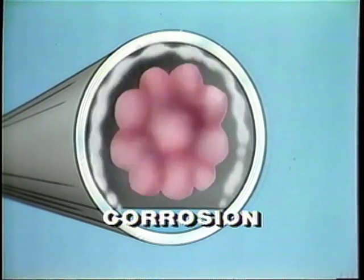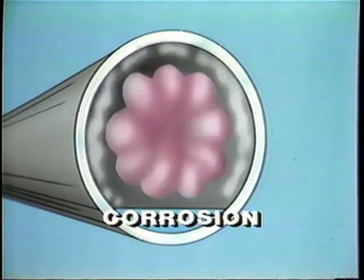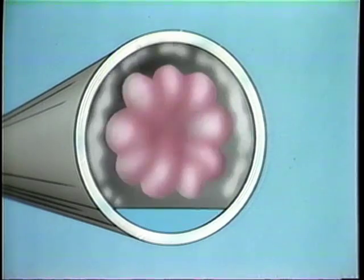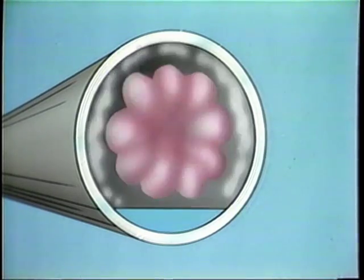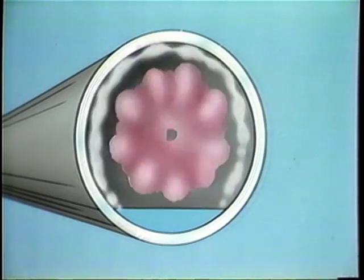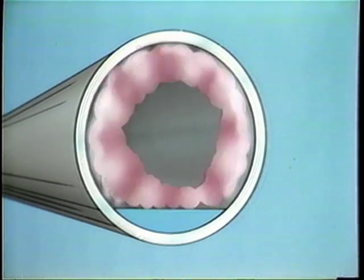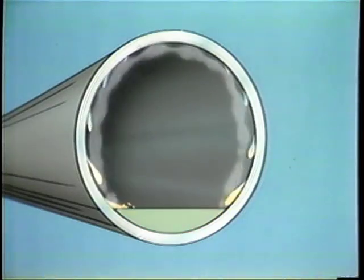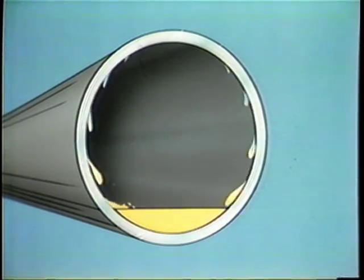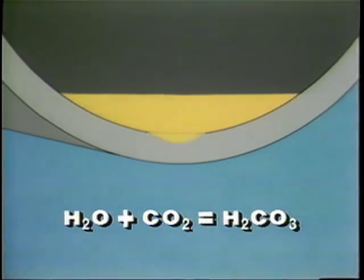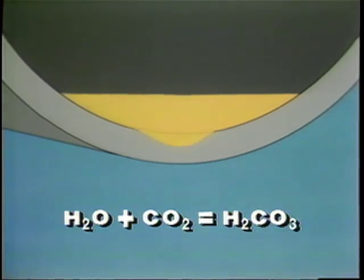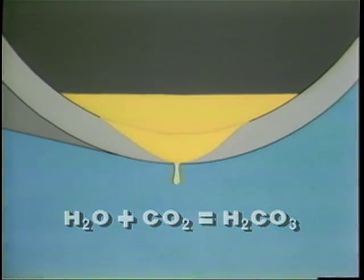Corrosion is likely in flooded coils when carbon dioxide — a gas common in steam systems — is trapped. Carbon dioxide combines with condensate as it cools to form carbonic acid. An accumulation of this acid can destroy piping and equipment.